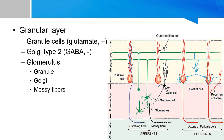In the granular layer, there is a structure called the glomerulus. The glomerulus is a small intertwined mass of nerve fiber terminals in the granular layer. It consists of granule cell dendrites and Golgi cell axon terminals surrounding the incoming mossy fibers.